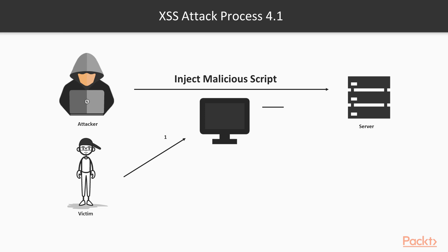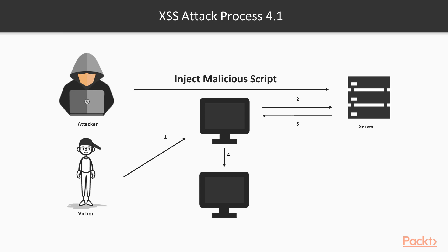The victim sends a request via the browser to the web server, and in return the response is shown in the browser, which also reaches the attacker. Basically, the attacker has inserted some malicious script, so when any user tries to access that web application, the user may be redirected to another website owned by the attacker. There is also a possibility that the cookies of the victim can be sent to the attacker, who can then use that cookie to access the website. This is the basic process of an XSS attack — it inserts malicious JavaScript in the web server and redirects the victim to a malicious website.